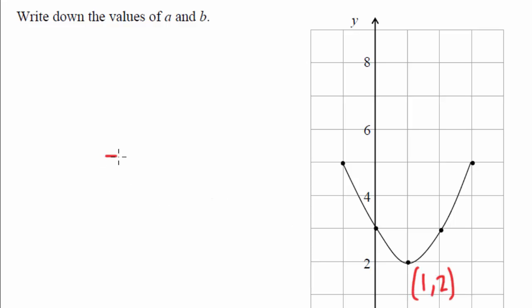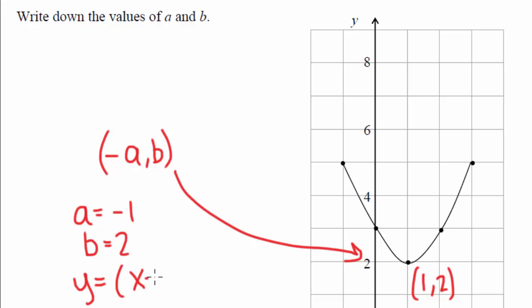So remember it's minus a and b is your turning point. So that's what these represent. So what we've got is a equals minus 1, b equals 2. So we've got y equals x minus 1 squared plus 2.